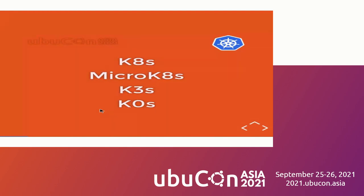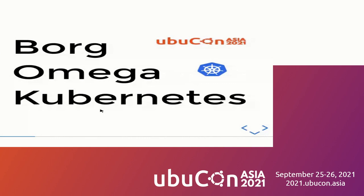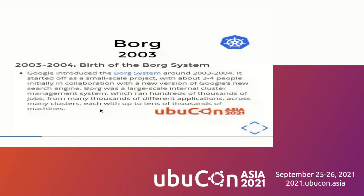For the history, Kubernetes originated from Google's internal cluster management project. They first called it Borg, then Omega, and then named it Kubernetes, making it an open source project in collaboration with the Cloud Native Computing Foundation. This is a short description of Kubernetes history.